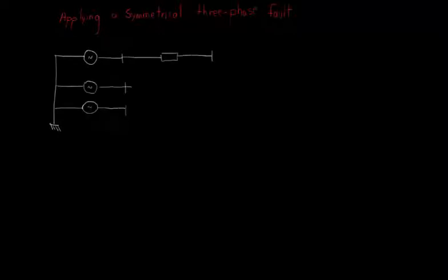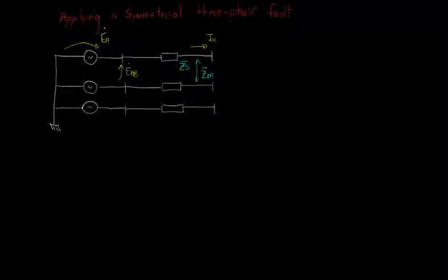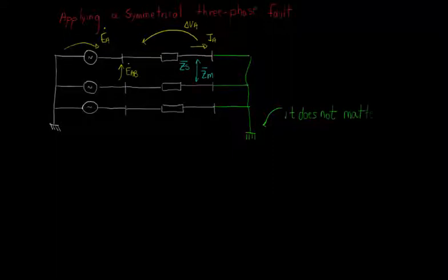Let's start applying symmetrical three-phase fault at the end of the Thevenin equivalent, something like this. Notice that it doesn't matter if the fault is grounded or not, because the three-phase fault is symmetrical. Let's label the current on phase A as the three-phase short-circuit current ISC3. Remember that EAB is equal to square root of 3 times EA with a displacement of 30 degrees, because we are assuming that the three-phase voltage source is symmetrical.